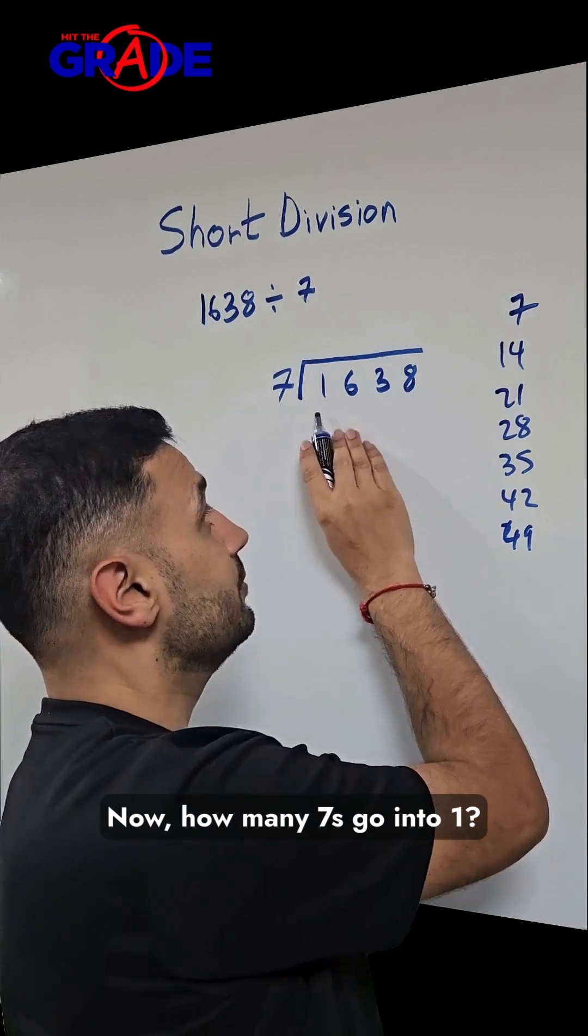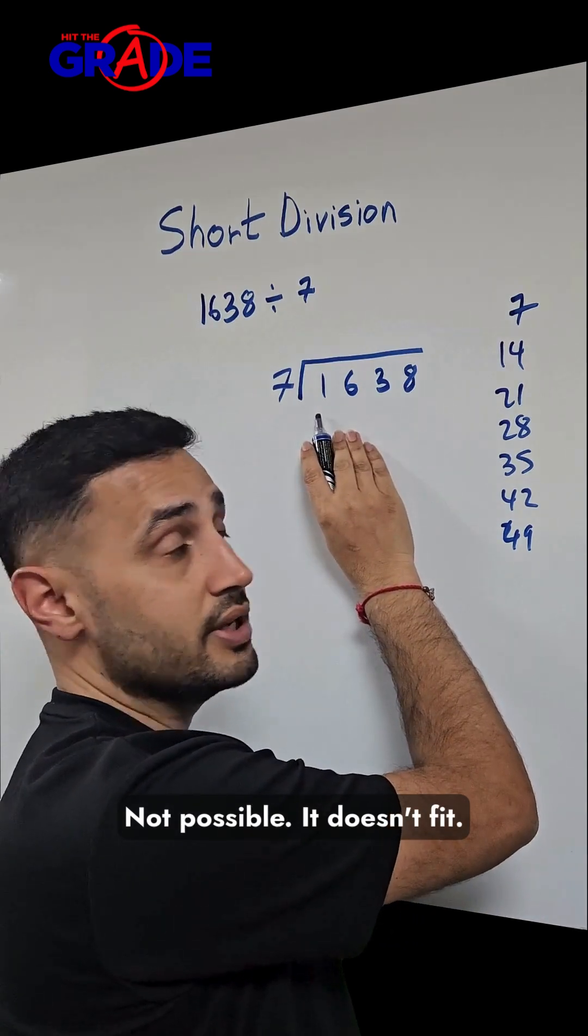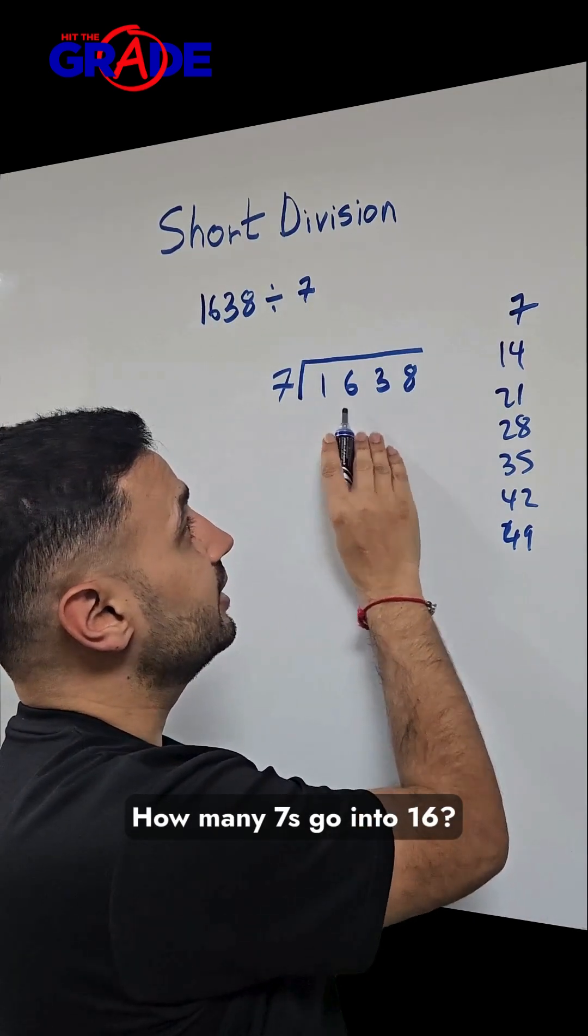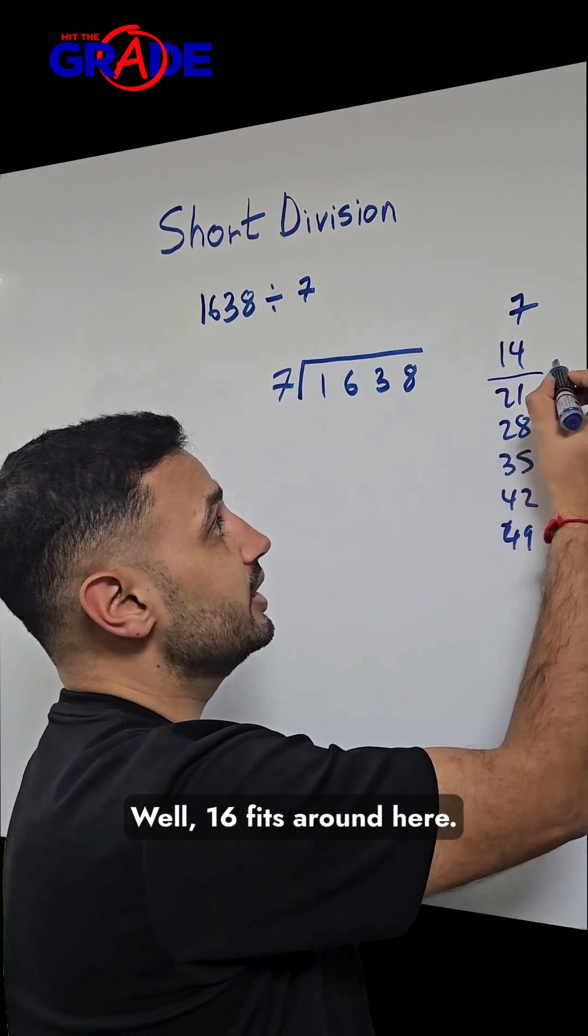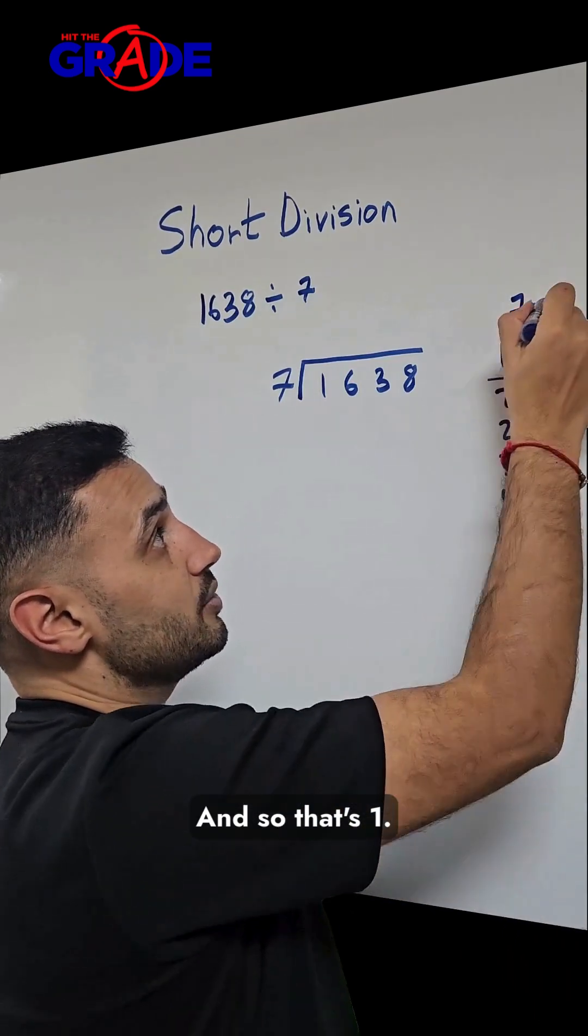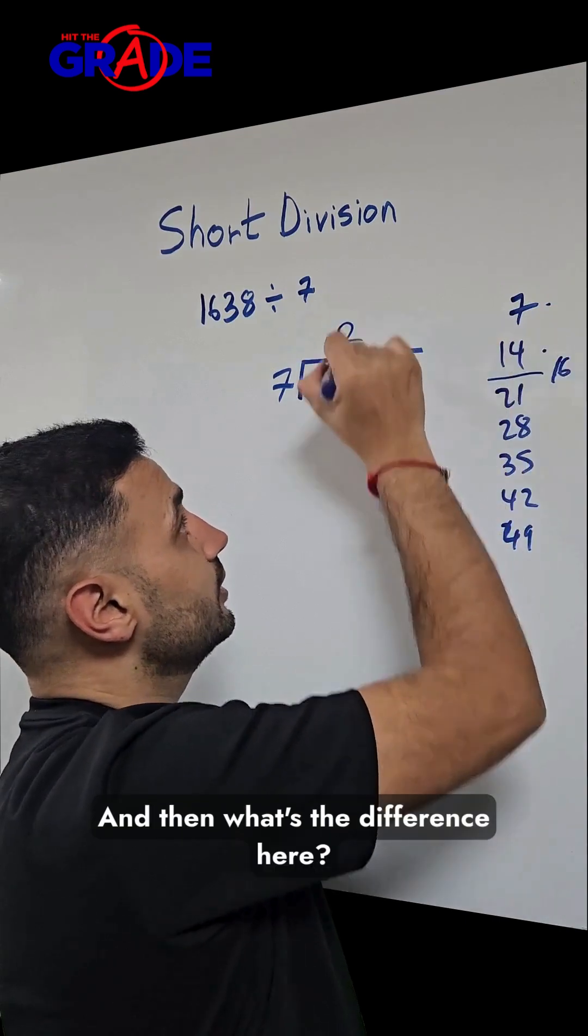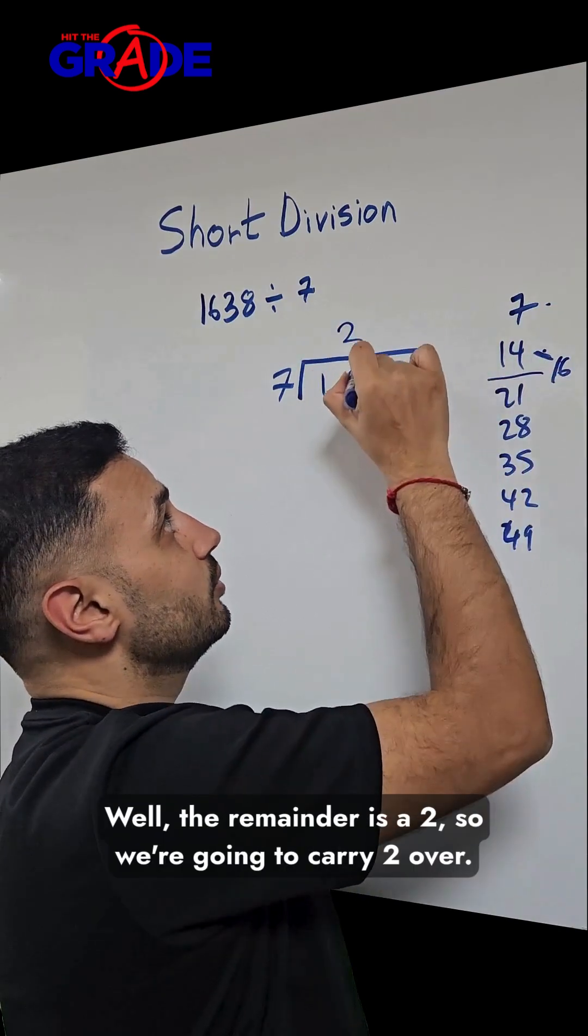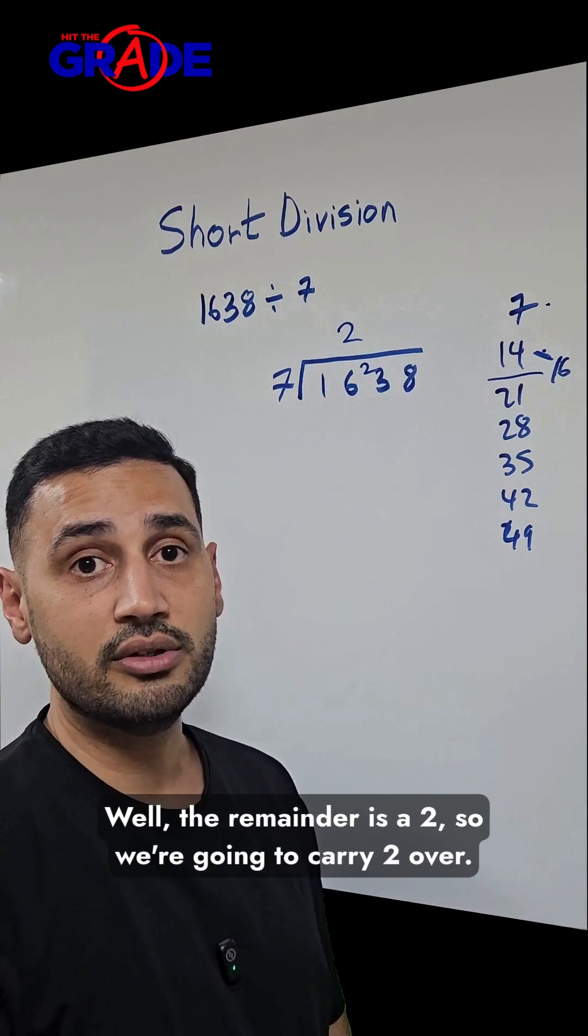Now, how many 7s go into 1? Not possible. It doesn't fit. How many 7s go into 16? Well, 16 fits around here. And so that's 1. That's 2 sevens. And then what's the difference here? Well, the remainder is 2, so we're going to carry 2 over.